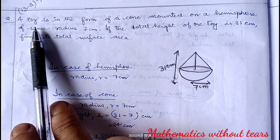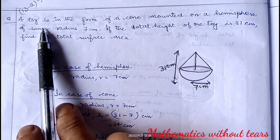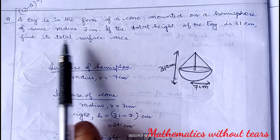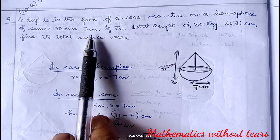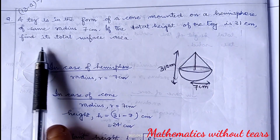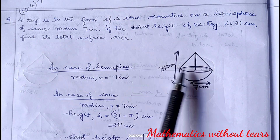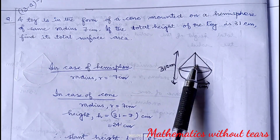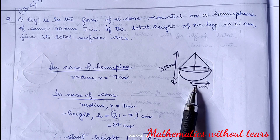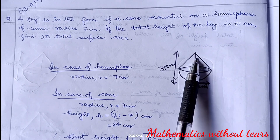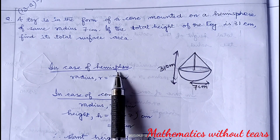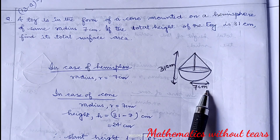In question number 9 of 13, it is given that a toy is in the form of a cone mounted on a hemisphere of the same radius 7 centimeter. If the total height of the toy is 31 centimeter, find its total surface area. So the total height is 31 centimeter, and the radius of both hemisphere and cone is 7 centimeter. In case of hemisphere, radius is 7 centimeter.